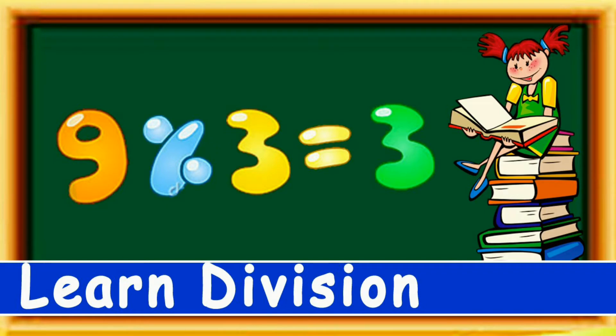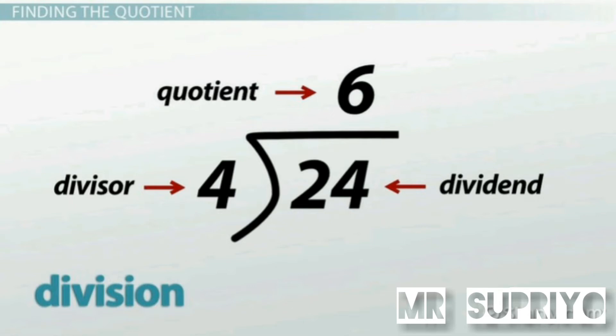Chapter 5: Division. Division is equal grouping or distribution of a given quantity. The number to be divided is called the dividend, and the number by which we divide is called the divisor. The answer in the division is called the quotient.